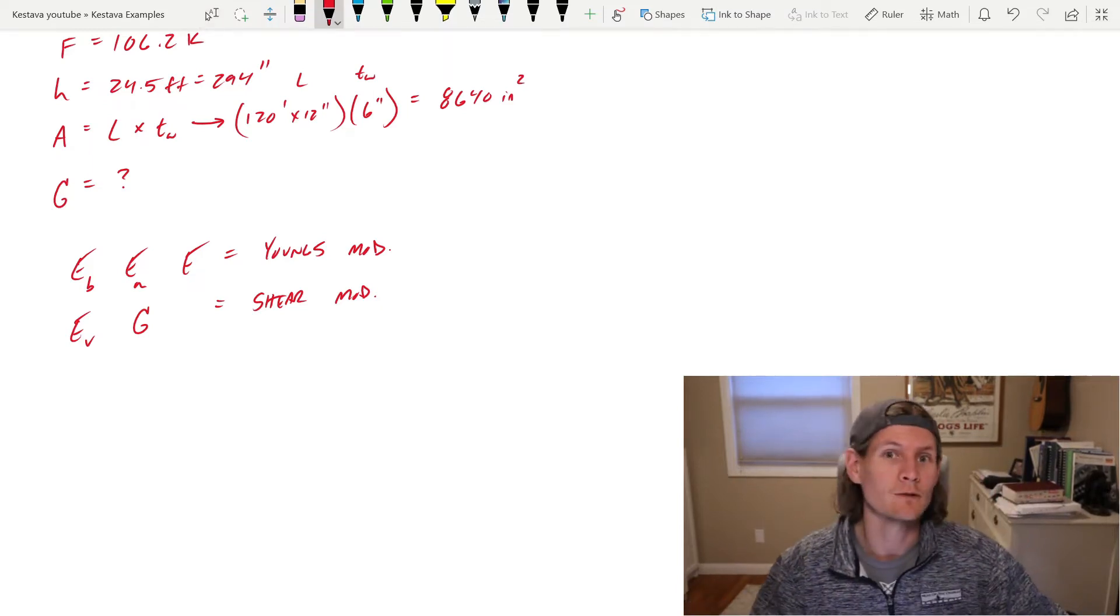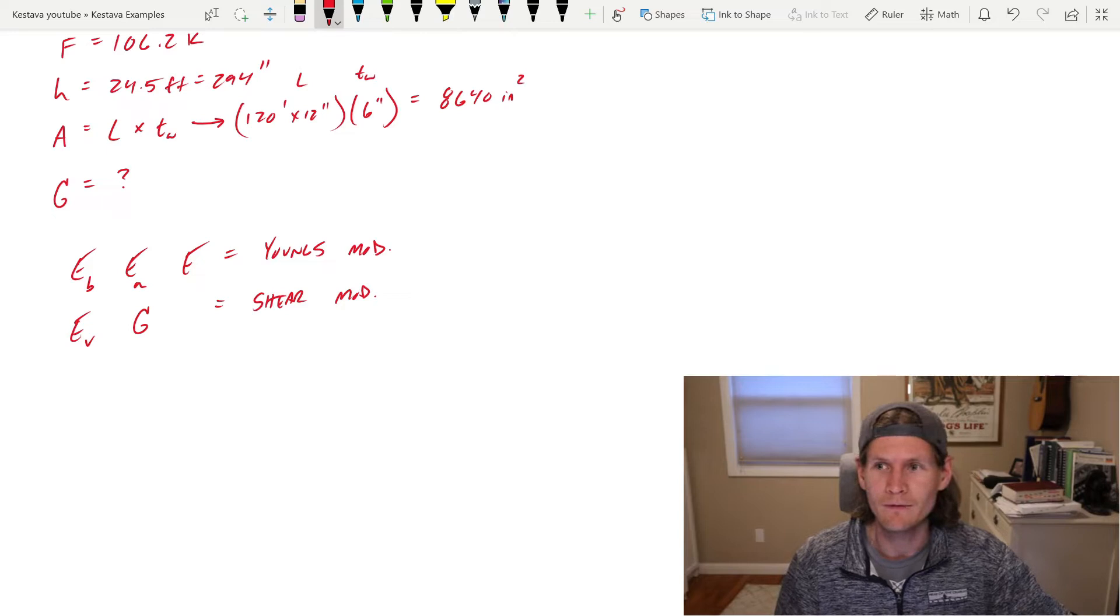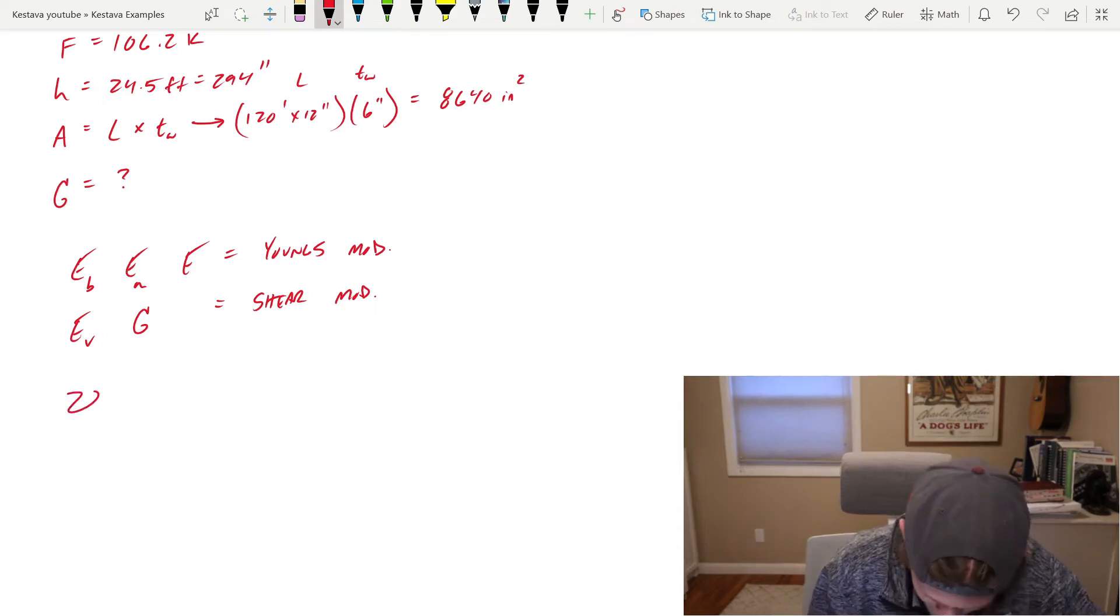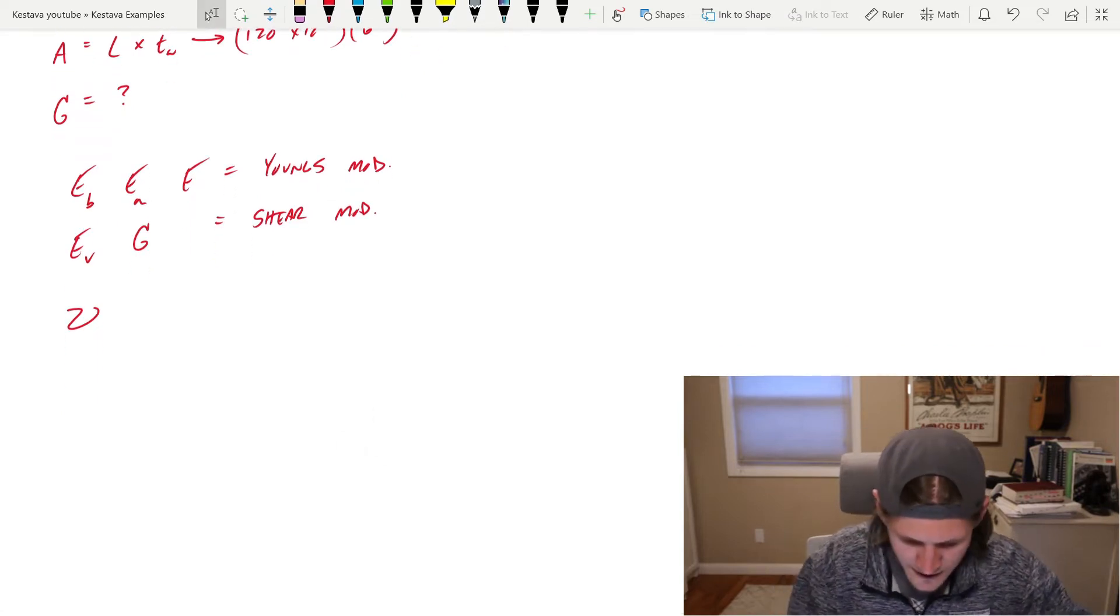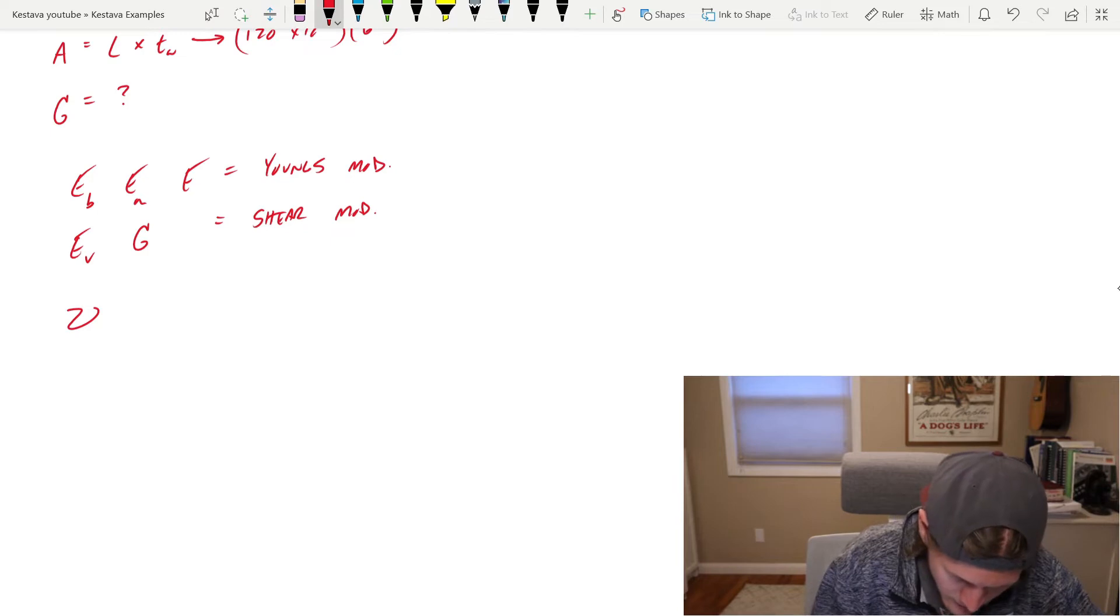And we do that by taking into account Poisson's ratio. I don't know how to say it. I've always called it Poisson's. I'm from the Northeast. Maybe we just stink at pronouncing everything, but I'm going to call it Poisson. And that is defined with this kind of squiggly V variable. I know I'm crushing it with the variables right now, but keep going with me. At least I'm drawing them correctly, I think.